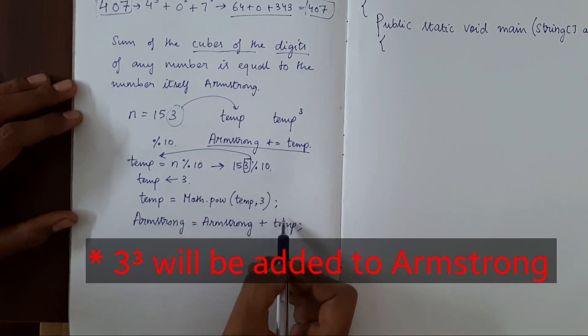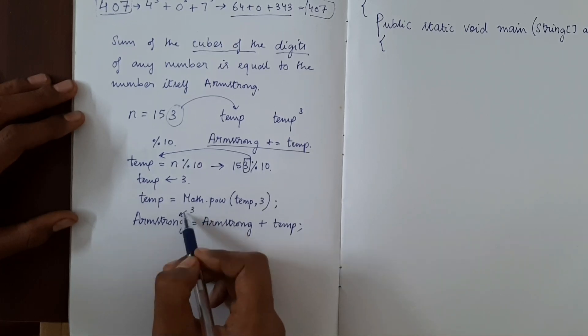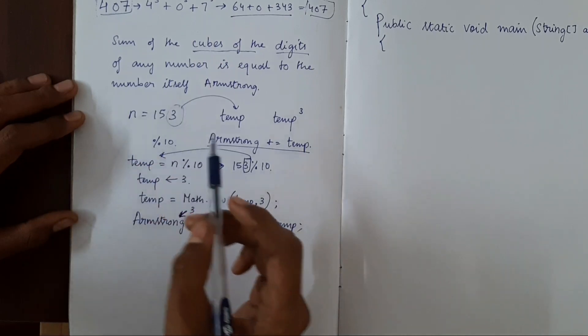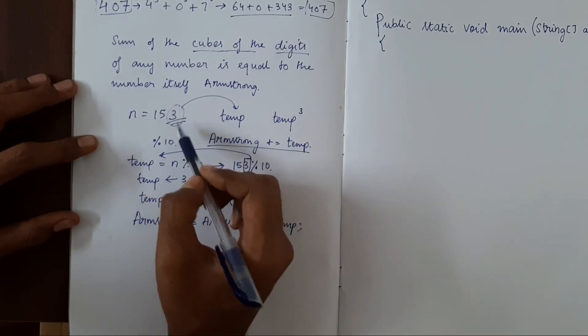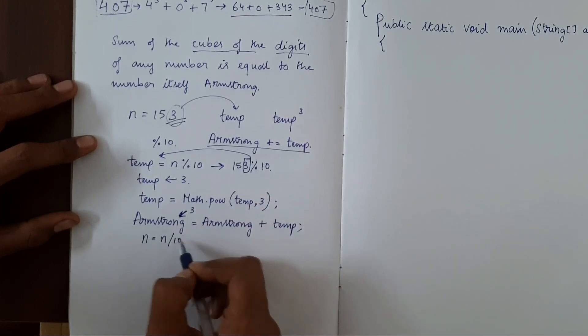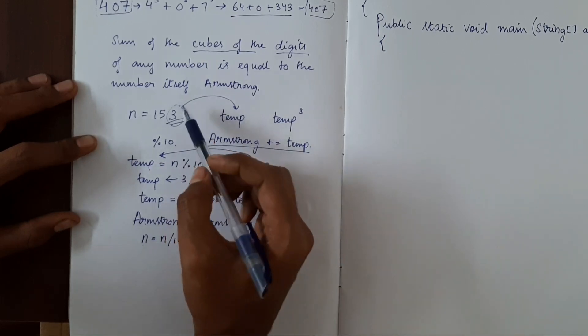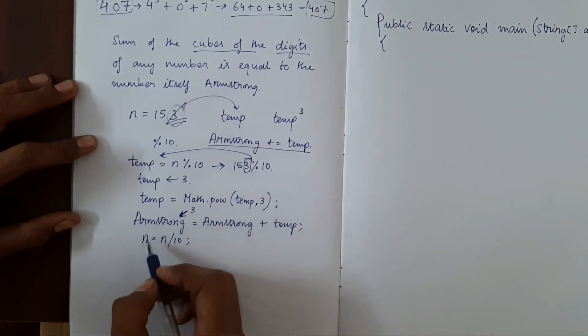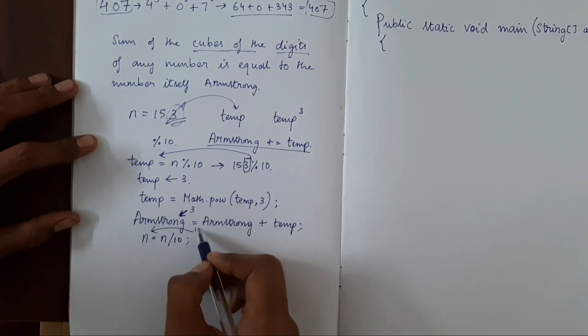Now 3 will be added to Armstrong. So this will become 3. Now we have to eliminate this digit. I will do n equal to n by 10. Since n is an integer, by doing this, we'll be eliminating this digit. Now n will become 15.